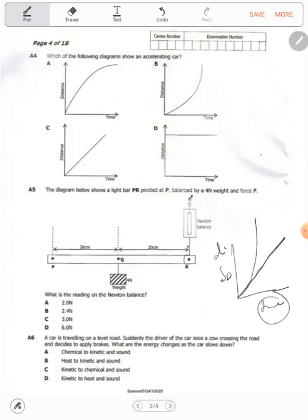Question five: the diagram below shows a light bar PR pivoted at P. It has been pivoted, that means this is where it is turning from, so it is swinging in that direction, hinged here, turning clockwise in that direction by this force F. What is the reading on the newton balance? The reading on the newton balance is the same thing as the value of force F. Now we are going to use the principle of moments to determine the value of F.